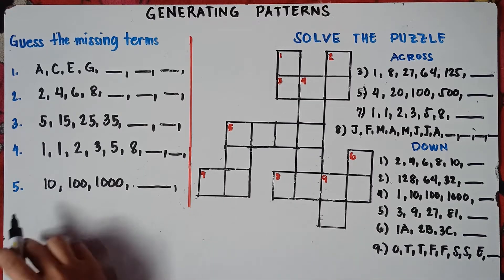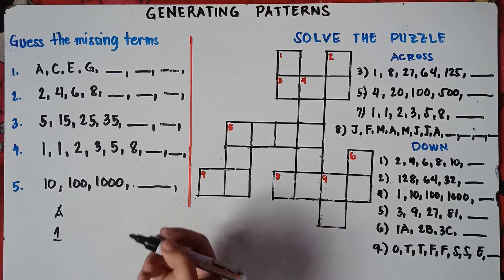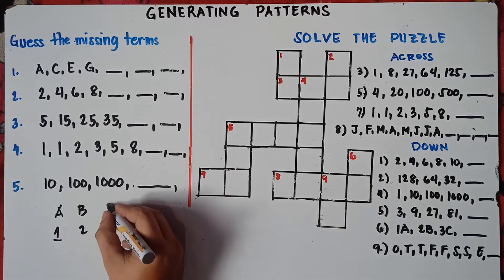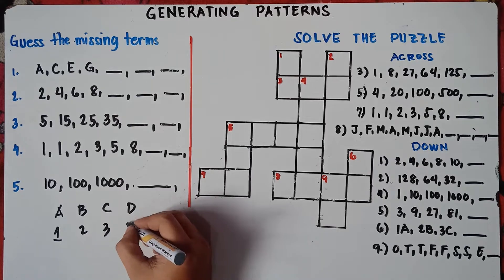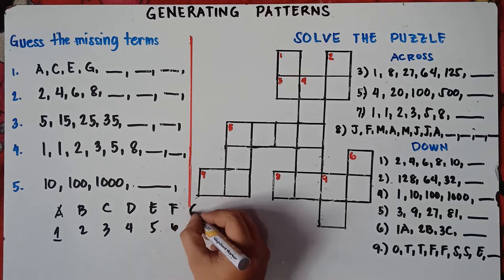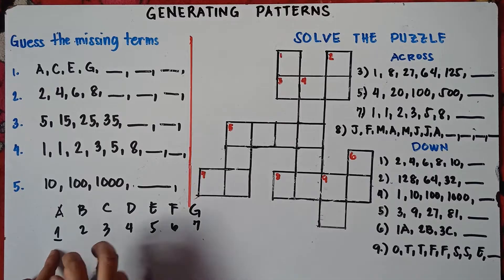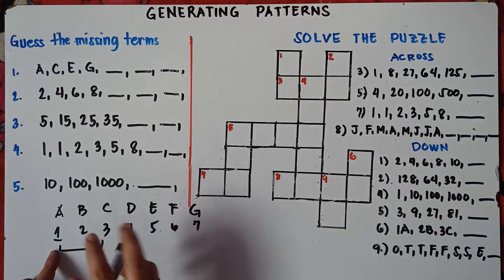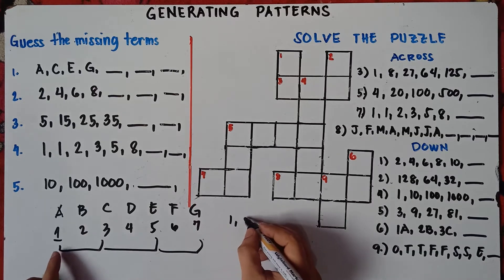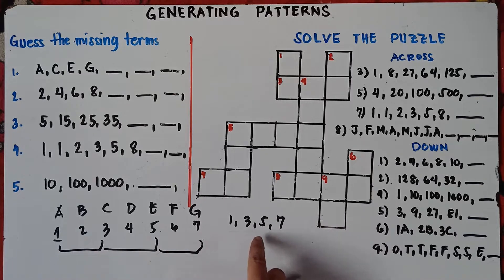Let's analyze this one. In the alphabet, A is the first letter. Let's assume A is 1. So B will be 2, C will be 3, D will be 4, E will be 5, F will be 6, and G will be 7. So we have A which is 1, C which is 3, E which is 5, and G which is 7 — giving us 1, 3, 5, 7.